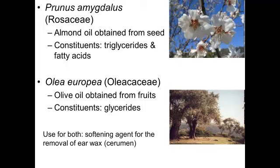Olive oil comes from Olea europea of the Oleaceae family. The olive oil is obtained from the fruits of this tree and is rich in glyceride content. Almond oil, on the other hand, is from the rose family — it's known as Prunus amygdalus — and the almond oil obtained from the seeds is also very rich in triglycerides and fatty acids, and can be used for its softening effects.